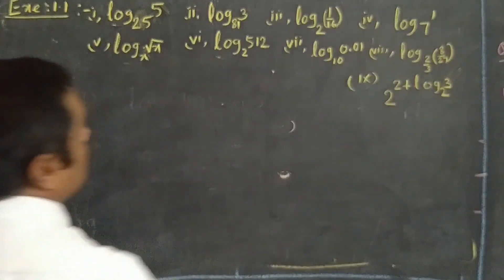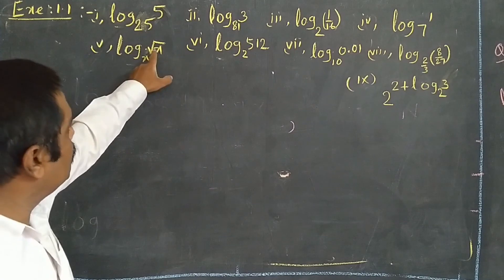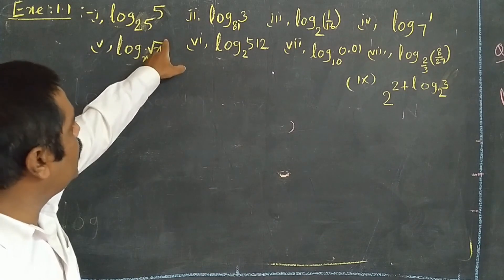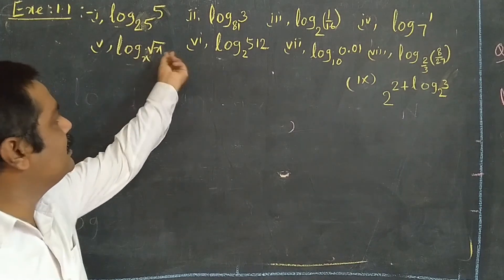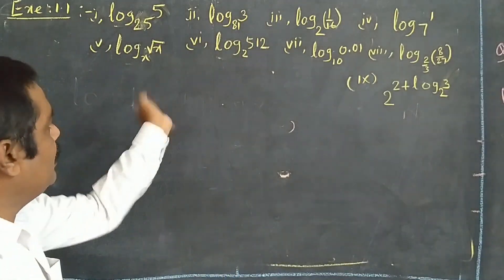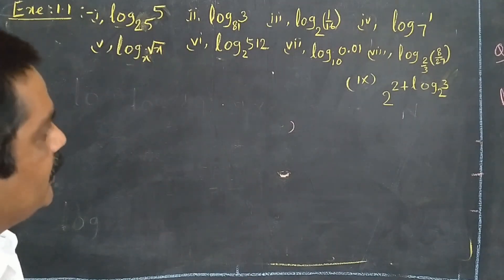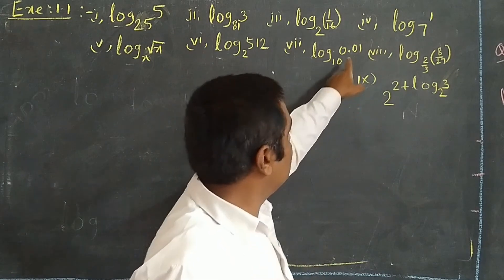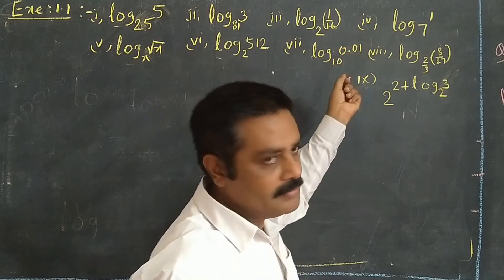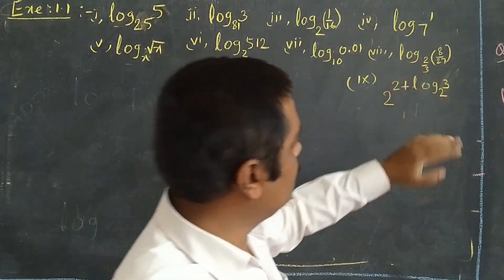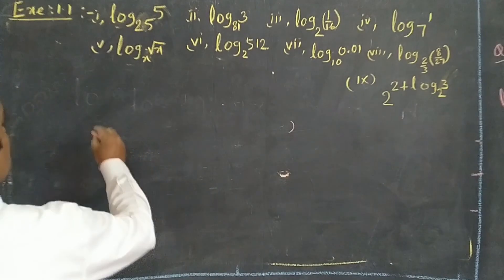In the same method you have to do the fourth and fifth questions. For the fifth question, remove the root and write it as power 1/2. So whatever is there, if you take as a numerator it becomes a negative exponent. Find the answer the same way. You will get 1/100 for one of these problems.